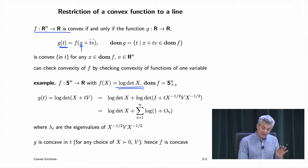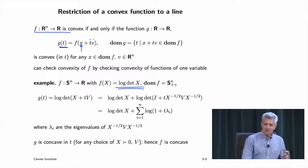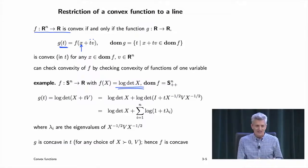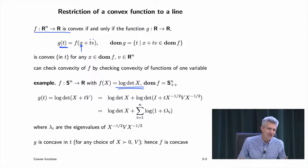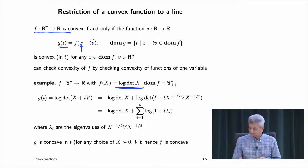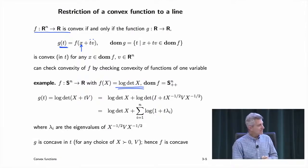It would be a pain to show this via a direct proof, although if you've taken information theory you might know a theorem that immediately gives you it's concave. Let's check this by forming an arbitrary line. A line in symmetric matrix space looks like x + tv, with base point x and direction v.